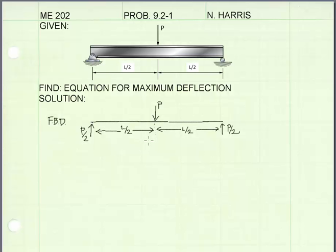The first step in using the deflection by integration method is to get the internal moments for the beam. To find the internal moments, we first must find the reactions. I've drawn a free body diagram of the beam, and our reactions on the symmetric beam are both P over 2.